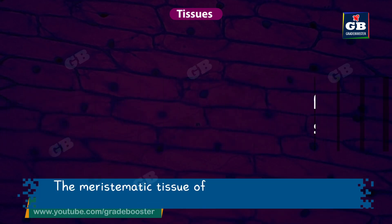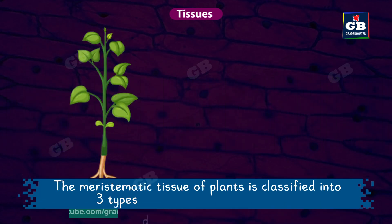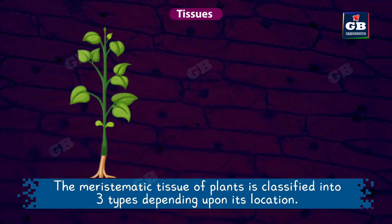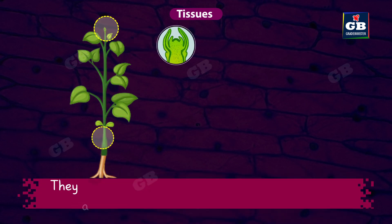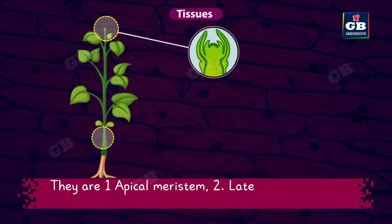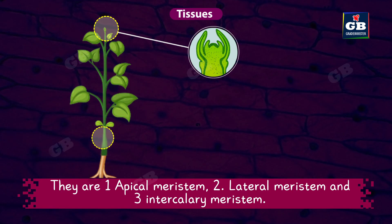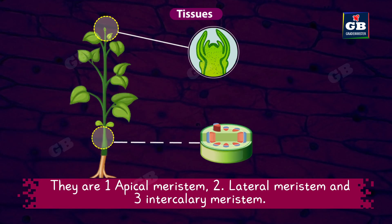The meristematic tissue of plants is classified into three types depending upon its location. They are: 1. Apical meristem, 2. Lateral meristem, and 3. Intercalary meristem.